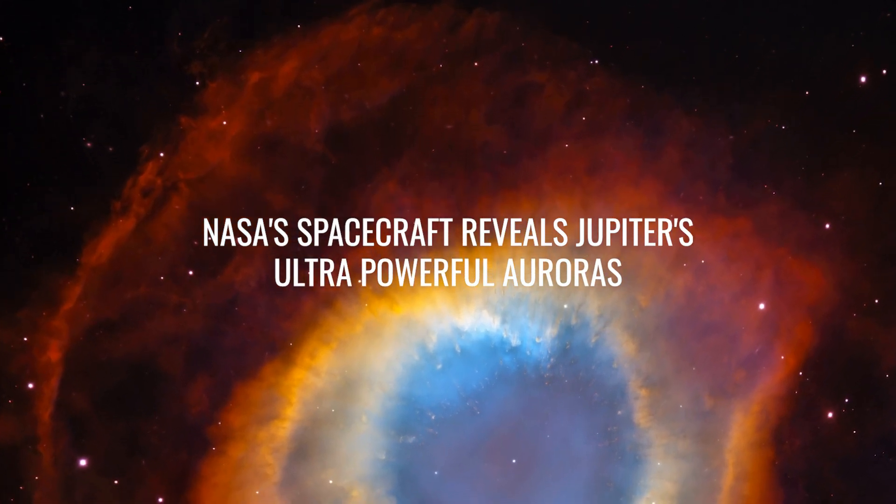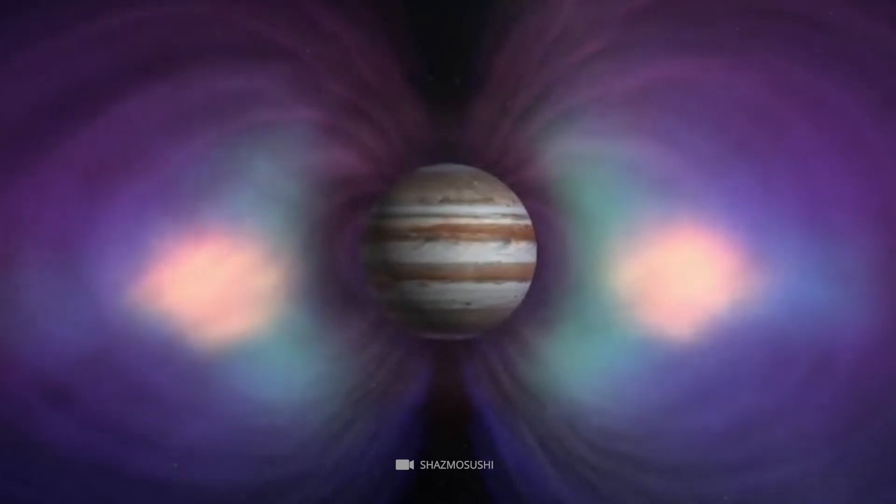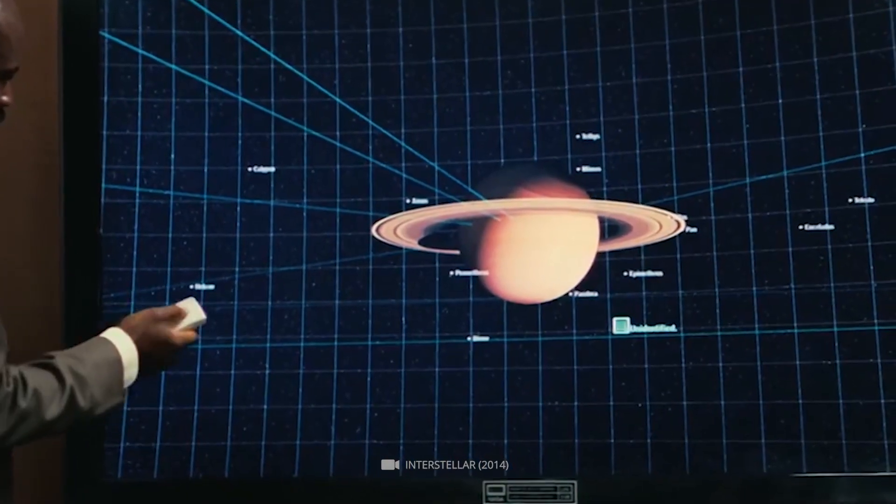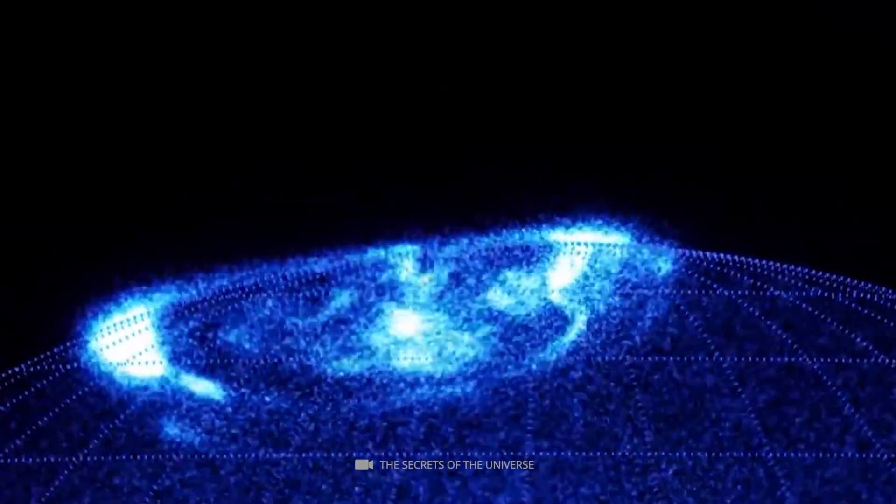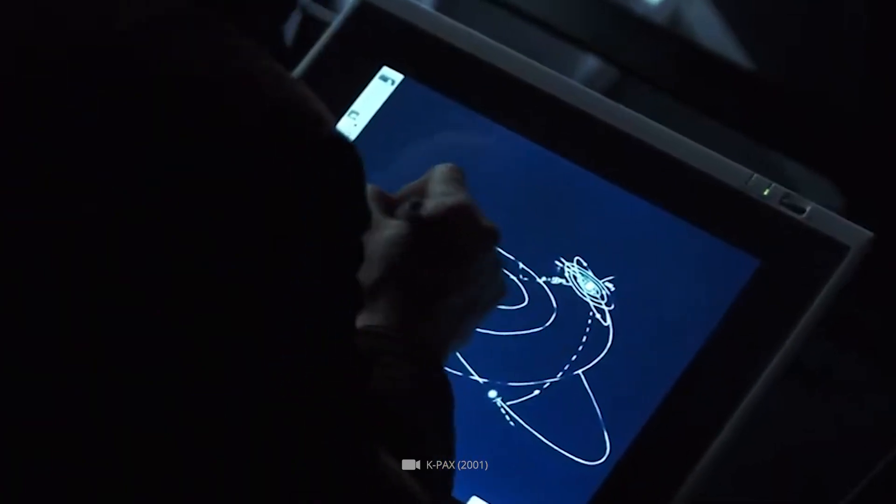NASA's spacecraft reveals Jupiter's ultra-powerful auroras. Jupiter's auroras are the most powerful in the solar system. Much like the breathtaking ones we see on Earth, the planet produces these powerful X-ray auroras typically at its poles, and several theories exist on how they are made.